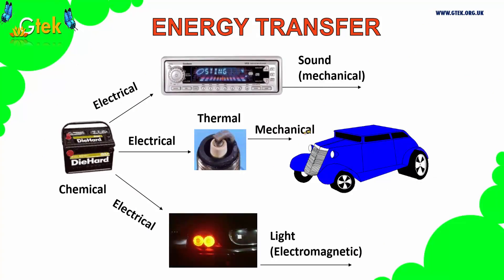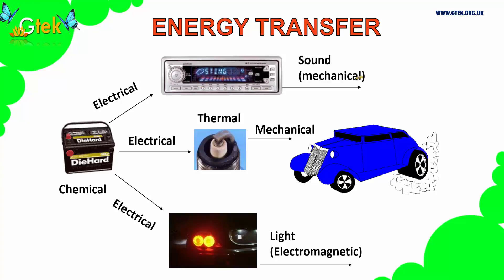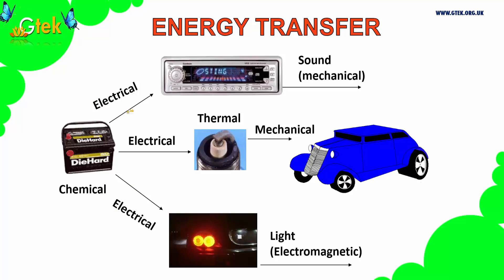You can see the energy transfer here. This shows how chemical energy is converted to electrical energy, and finally you can find the sound mechanism. There is also a conversion of mechanical energy, and light energy which involves electromagnetism. These are examples of how chemical, electrical, thermal, sound, and light energy transfer from one source to another.